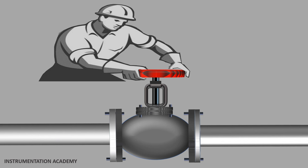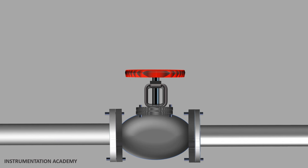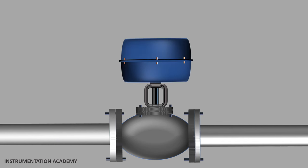For this, instead of hand wheels or levers, actuators are used to operate the valve. Actuators reduce the need of operator to go near to the valve for opening and closing. When actuators are used valves can be operated from the control room.